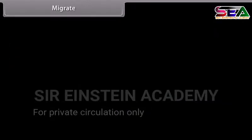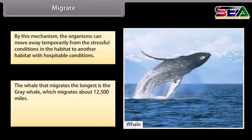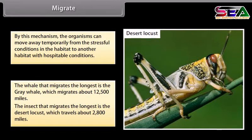By migration, organisms can move away temporarily from stressful conditions in their habitat to another habitat with hospitable conditions. The whale that migrates the longest is the grey whale, which migrates about 12,500 miles. The insect that migrates the longest is the desert locust, which travels about 2,800 miles.